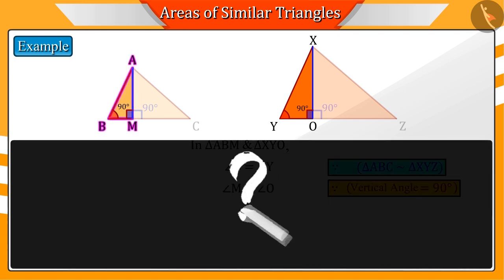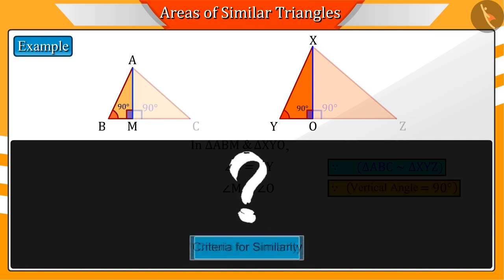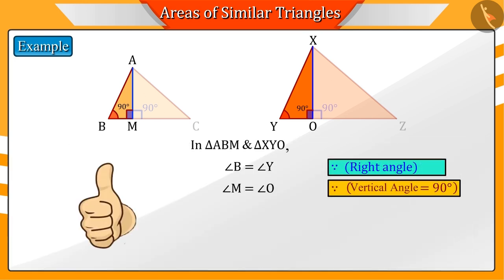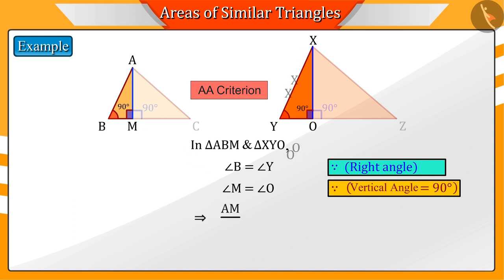Can you find if triangles ABM and XYO are similar? Good. These are similar according to the AA criteria of triangles. Hence, the ratio of corresponding sides AM and XO and sides AB and XY will be equal.